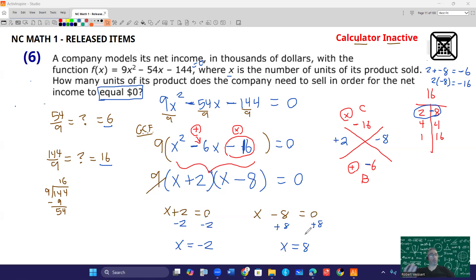Now, think realistically. This is a word problem. We're talking about money. A company models its net income in thousands of dollars. x is the number of units. Can you have a negative number of units? No, it can't be negative.